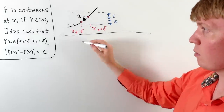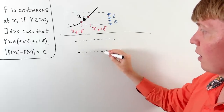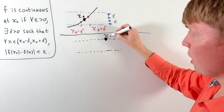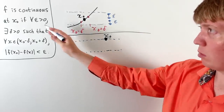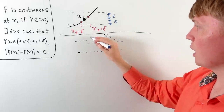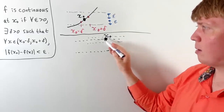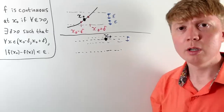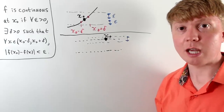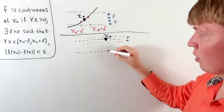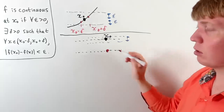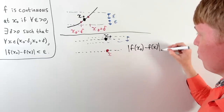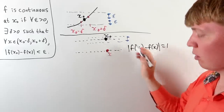We can see how this works with a discontinuous function. For the function equal to 1 on rational inputs and 0 on irrational inputs, pick x₀ as a rational number. We need to find delta for all epsilon greater than zero, even really small values. But this isn't possible, because rational and irrational numbers can get arbitrarily close to each other — there's always an irrational number close to x₀, making the absolute difference between f(x₀) and f(x) equal to 1, which is greater than epsilon.